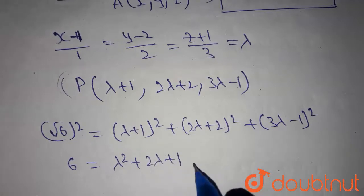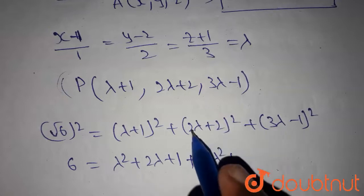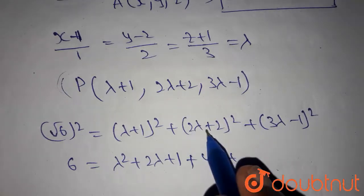Lambda square plus 2 lambda plus 1, similarly here 4 lambda square plus 2 into 2 lambda into 2, which is 8 lambda plus 4.